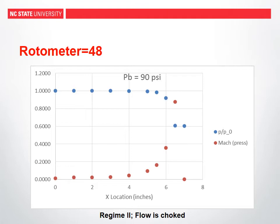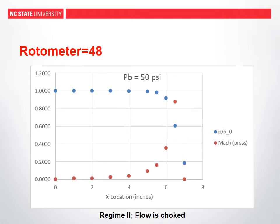When the back pressure reached 90 psi the flow was choked. At this point the pressure drop does not accelerate the flow further. As the back pressure decreases further, the flow remains choked and expands after the nozzle exit, which is no longer considered isentropic flow. As predicted in the choked flow condition, the Mach values have not changed significantly and the rotometer reading remains approximately the same.